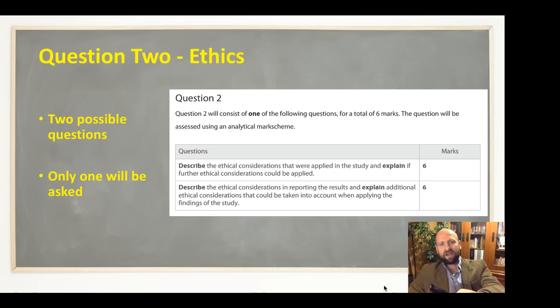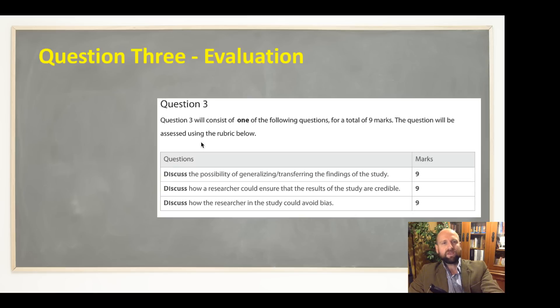And then the second one here—this is actually quite tricky—about the ethics and reporting the results and applying the findings. My hunch is that this first question is going to appear much more frequently in the exams. However, you have to be equally prepared to answer both. There are six marks—you get one point per relevant mark, so you have to make six total points.